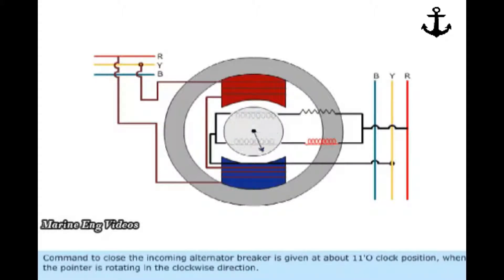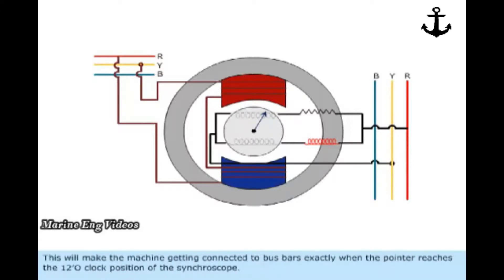Command to close the incoming alternator breaker is given at about 1 o'clock position when the pointer is rotating in the anticlockwise direction. This will make the machine getting connected to busbars exactly when the pointer reaches the 12 o'clock position of the synchroscope.